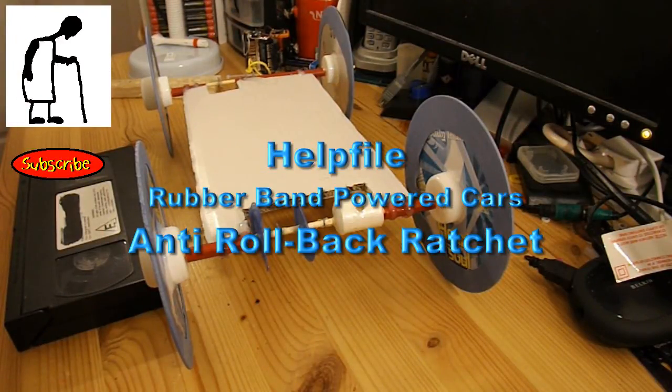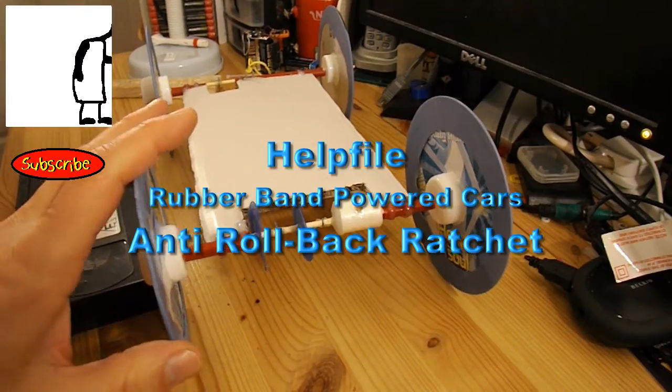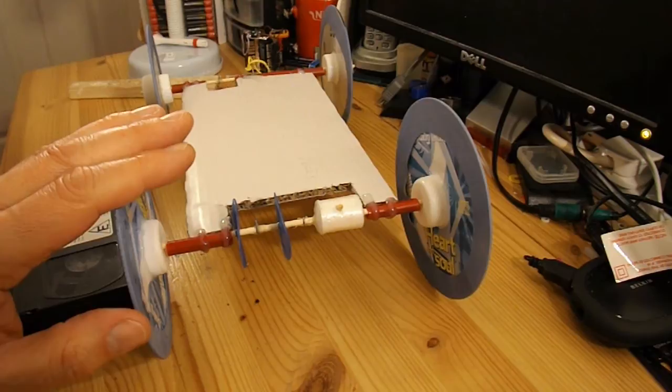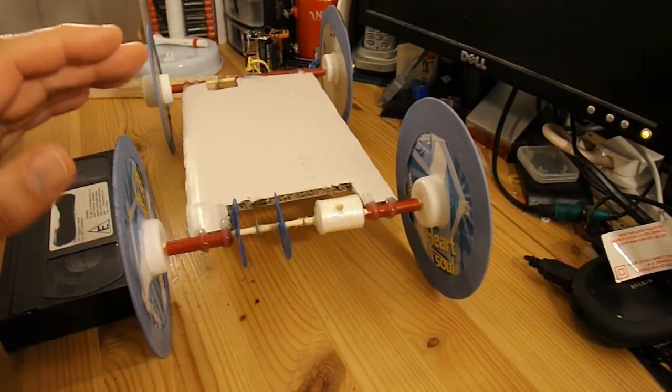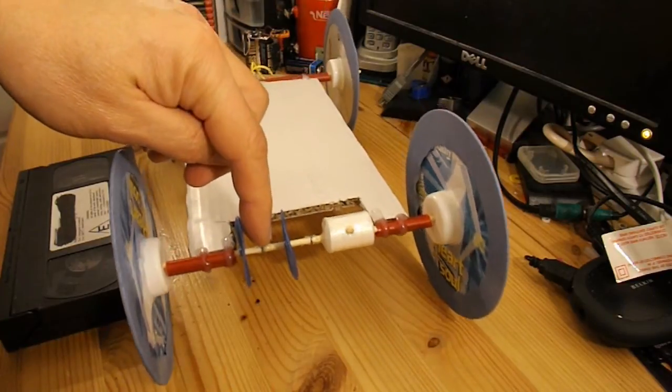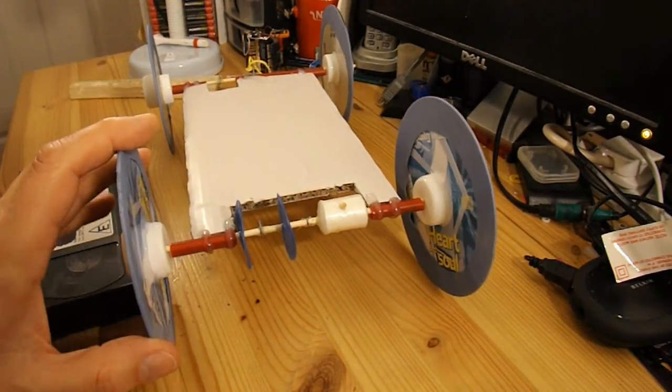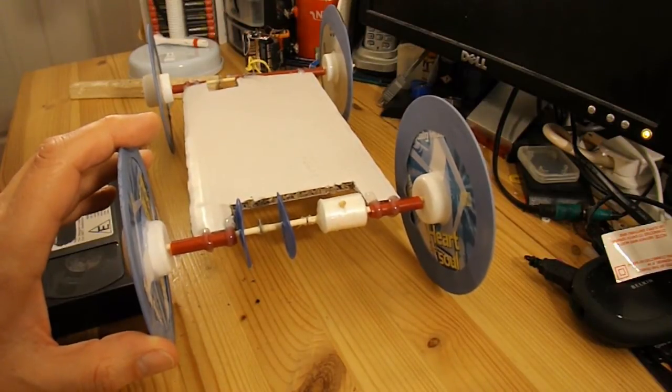Hi guys, rubber band powered cars again. In the last episode we modified this car so that we could put a brake on it which is a bit of string that wraps around the back axle and tightens up as the car goes forward and stops it, in this case at three meters.